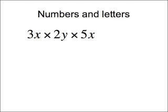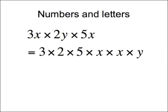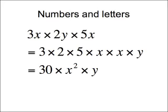Putting this together now — numbers and letters with the same letter involved. Apply the rule: separate the numbers. So we've got 3 times 2 times 5 times x times x times y. 3 times 2 times 5 is 30, x times x is x squared, and then there's just the times y on the end. Finally, write all the symbols together without the multiply signs. Note that 30yx squared is acceptable, but 30y squared x would be wrong, because it's the x that's squared.